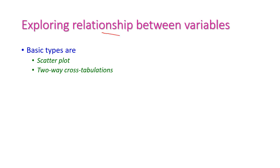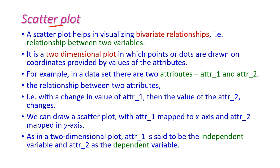Next, let us see exploring the relationship between variables — that is, the relationship between two attributes. For identifying the relationship we have two types: the first is scatter plot and the second is two-way cross-tabulation. A scatter plot is used to visualize the bivariate relationship, that is the relationship between two variables. The scatter plot is a two-dimensional plot where points or dots are drawn on coordinates provided by the values of the attributes.